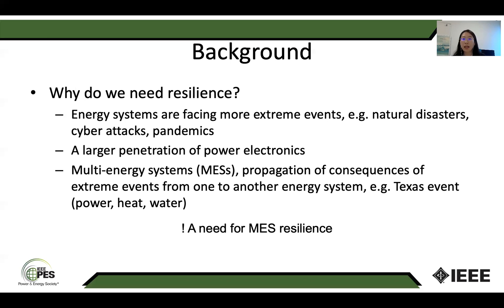A good example is the Texas event that happened in February, where Arctic air flows affected power plants, gas lines, and mechanical instruments. The power grid was shut down for a long time, leaving more than 4 million people without electricity, many people without heat, and a lot of people without water. This kind of event has happened before in Texas, so there is a huge need for multi-energy system resilience.